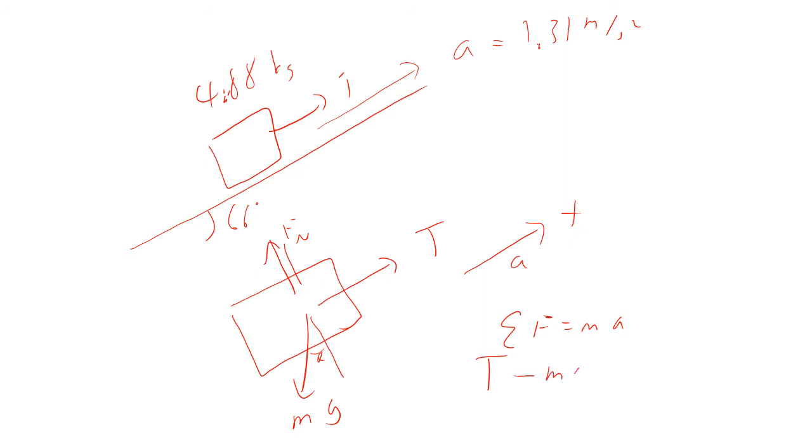So, the tension minus mg sine theta, because this is mg sine theta right down in there. So, that means the tension is going to be equal to ma plus g sine theta, after we do a little bit of algebra. And that comes out to be 50.1 newtons.